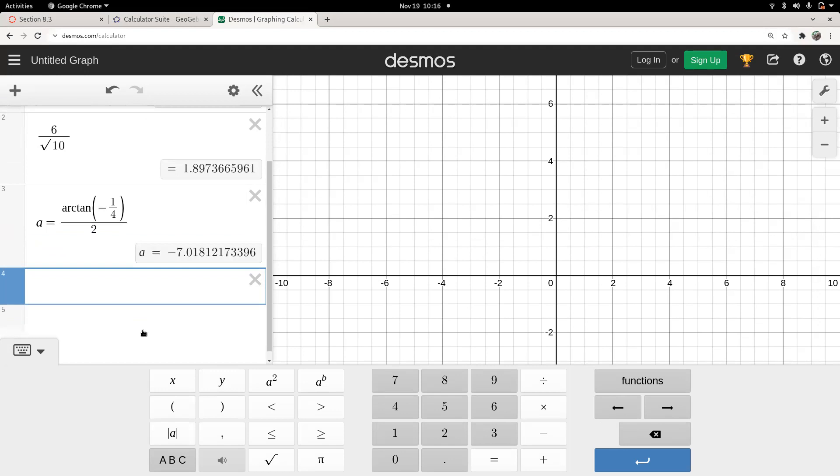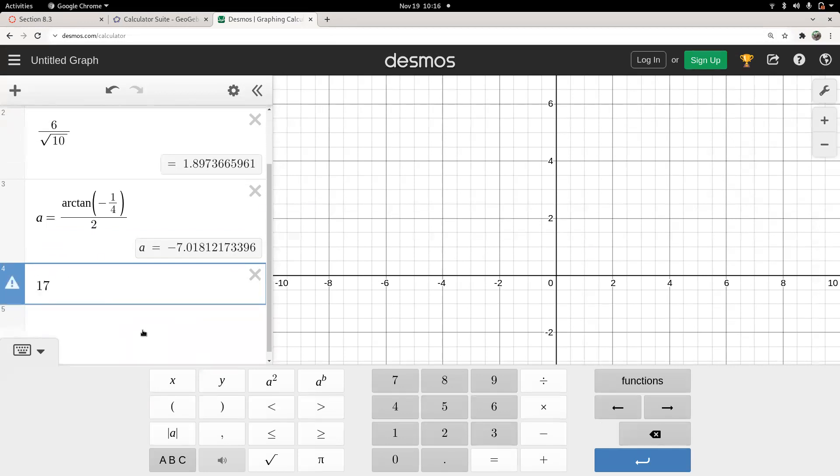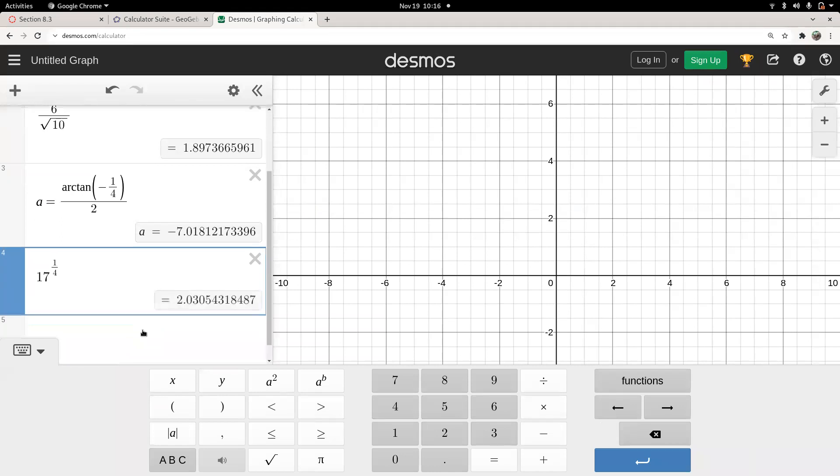Now the coordinates of that point, the real part is just going to be that 17 to the one-fourth power, which is the square root of the square root, times the cosine of that new angle, which I called A.